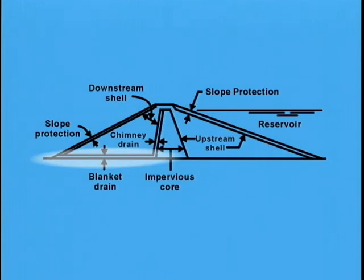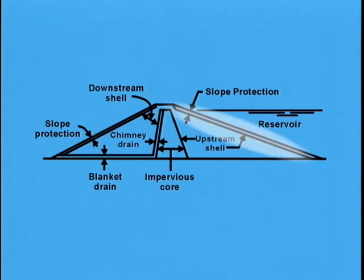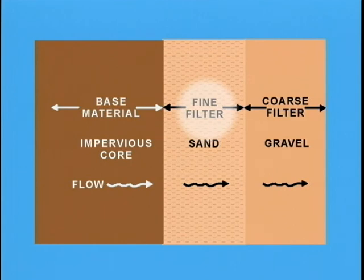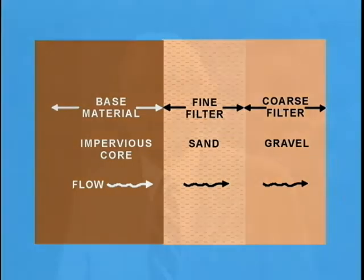Similar design is required for the blanket drain with respect to seepage from the foundation. Filters are also frequently required between the upstream shell of a dam and the overlapping riprap slope protection. Upon drawdown of a reservoir, water will seep out of the upstream shell, and filters are required to prevent washing of upstream shell material through the riprap and into the reservoir. Filters may consist of one layer or two or more layers. The material being protected is termed the base material; if it is the core of a dam, a fine filter such as sand would be required first, followed by a coarse filter of gravel.